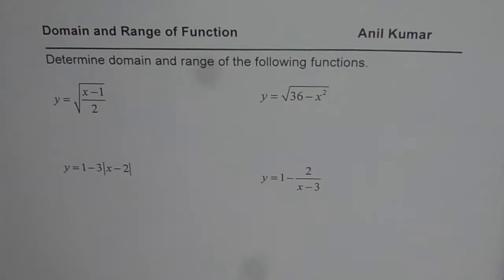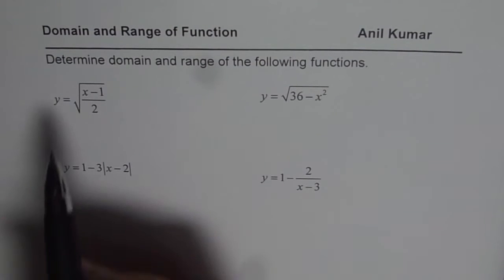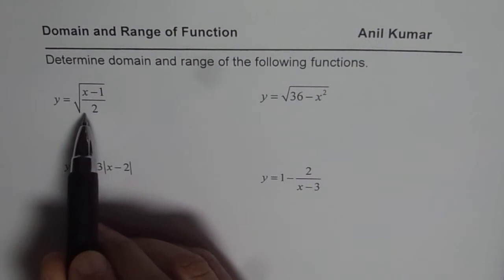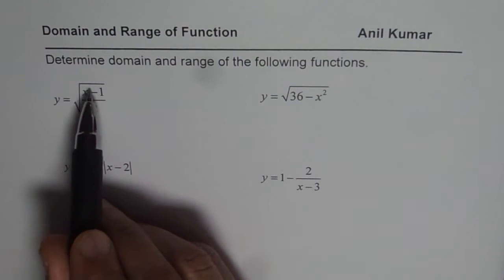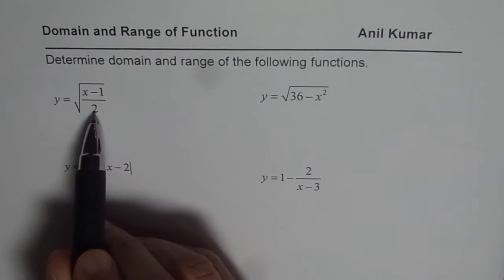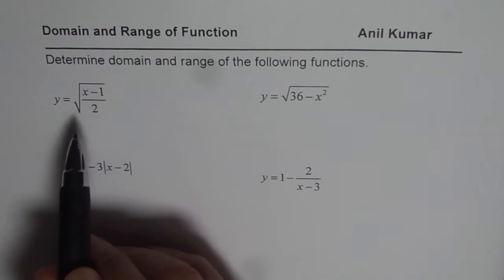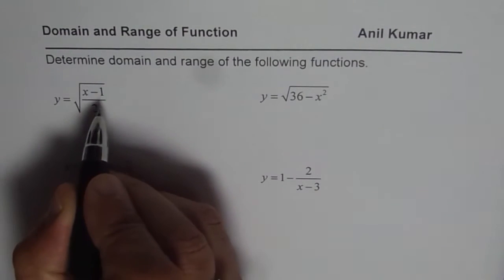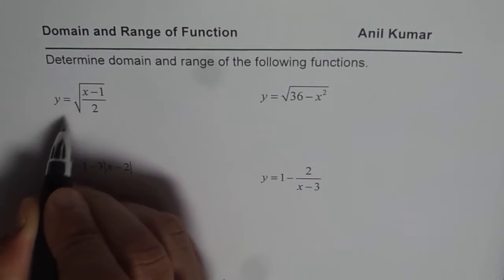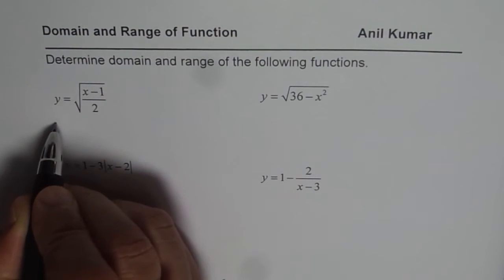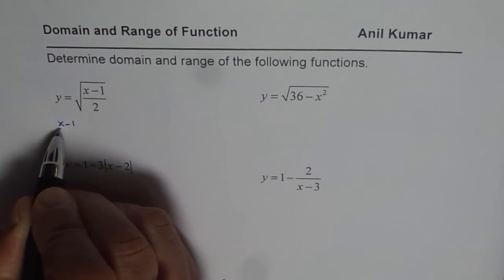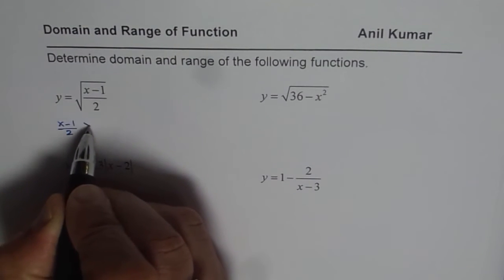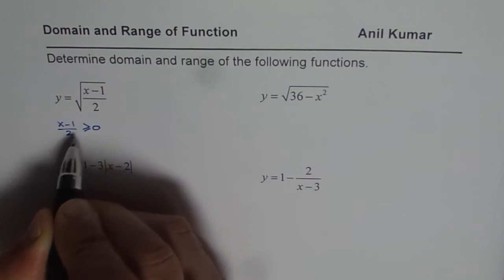Now, how to find domain and range? Whenever you have a square root, the expression within the square root should be non-negative. So to find the domain, we say that (x minus 1) over 2 should be greater than or equal to 0.